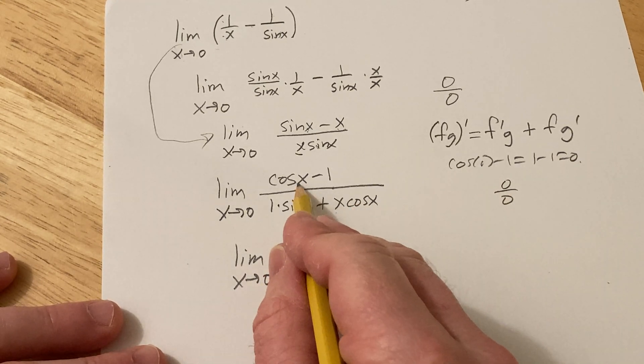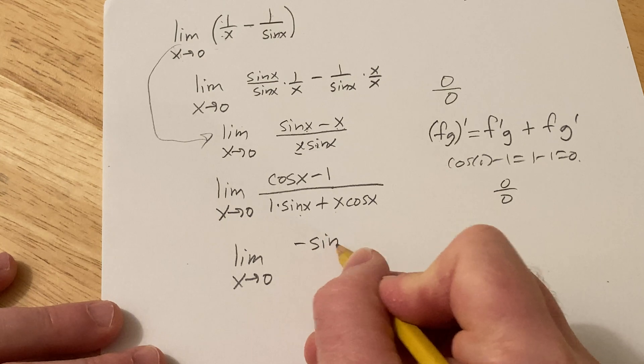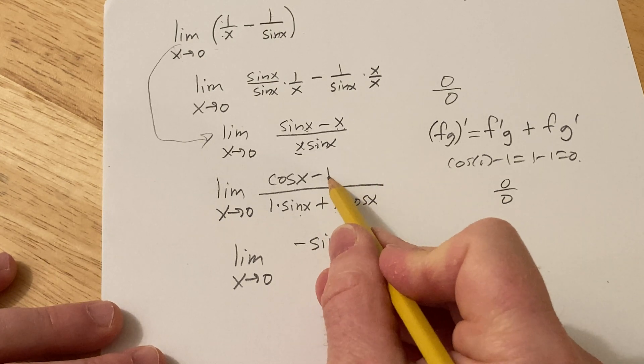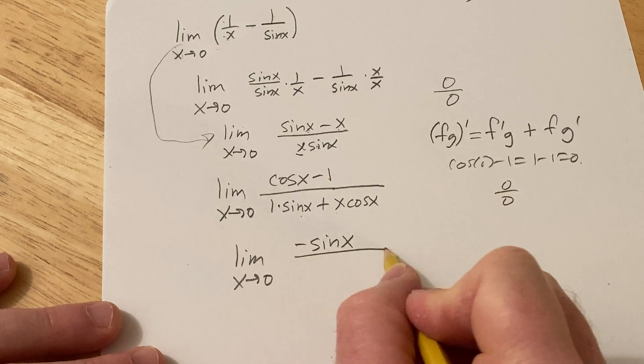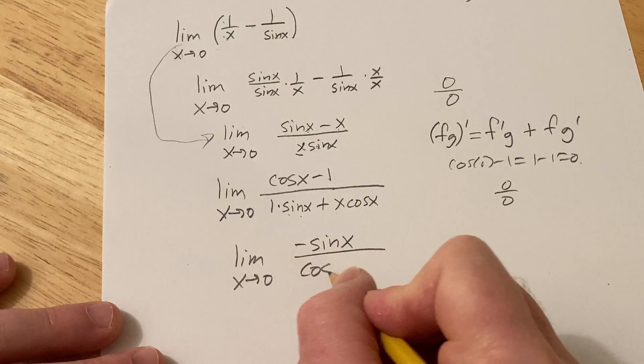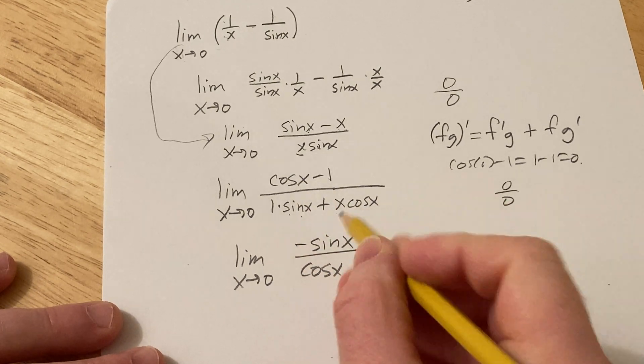Taking the derivative of cosine, we get negative sine. The derivative of negative 1 is 0, so it goes away. Derivative of sine is cosine. Oh, look at this, we have to use the product rule again.